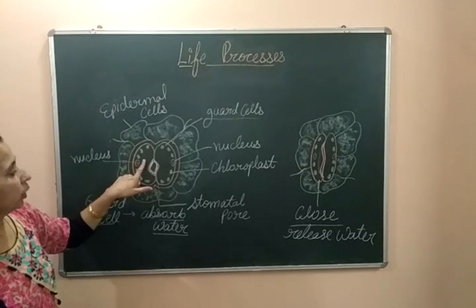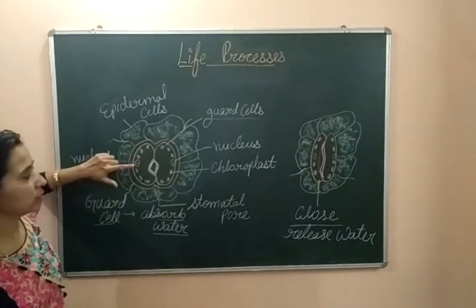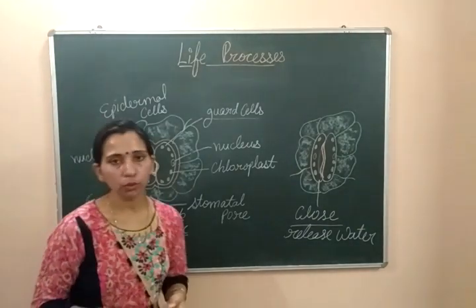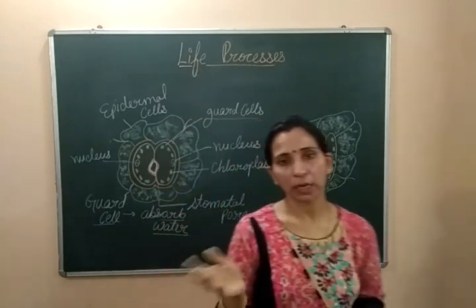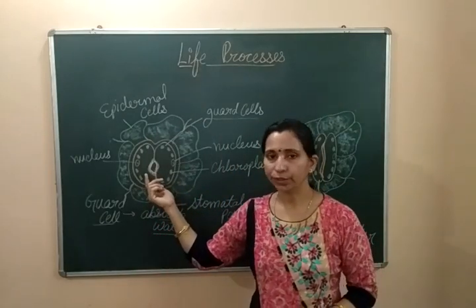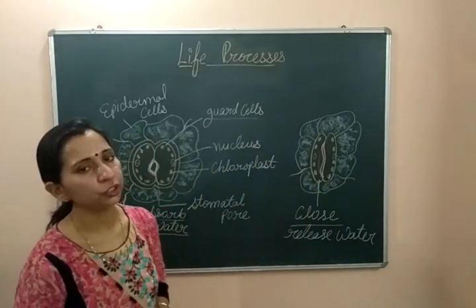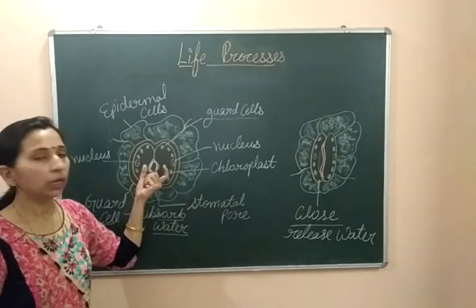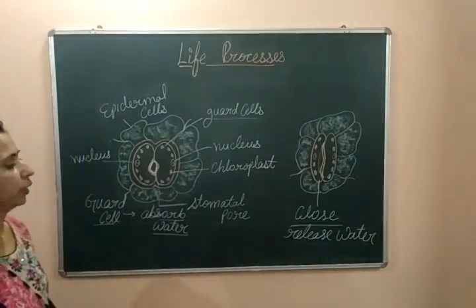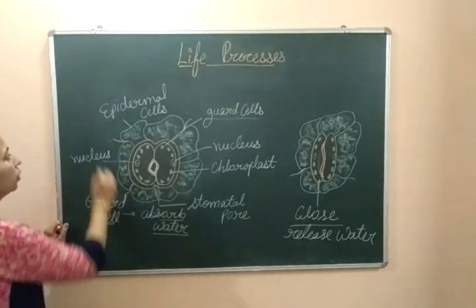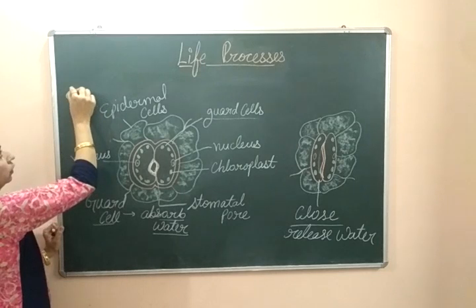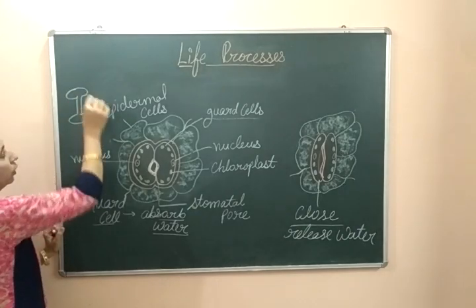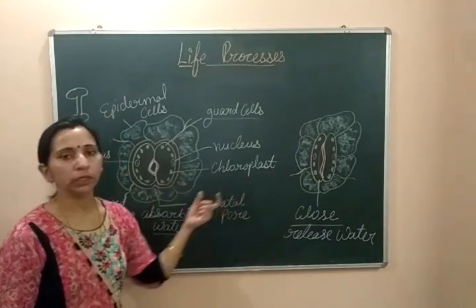The structure of guard cells being kidney bean shaped is the characteristic feature of dicot plants. Dicot plants are plants which contain two cotyledons. In these plants, the guard cells have a kidney-shaped structure. But in the case of monocot plants, the guard cells are dumbbell-shaped. This is the difference between monocot and dicot plants.